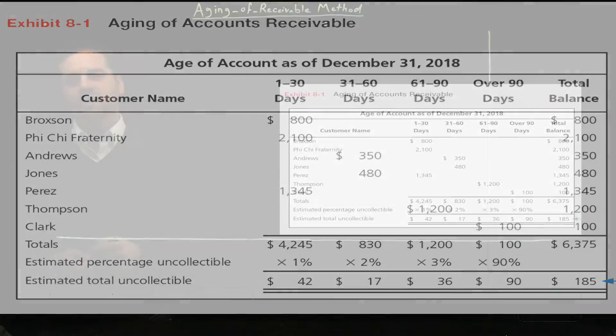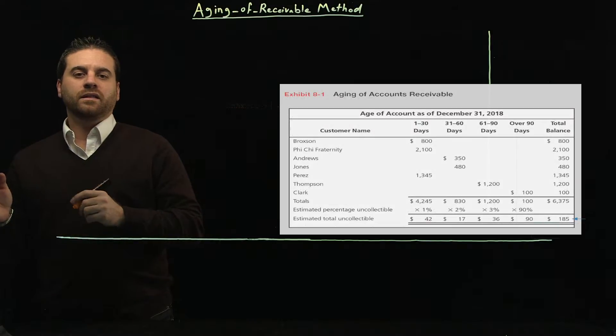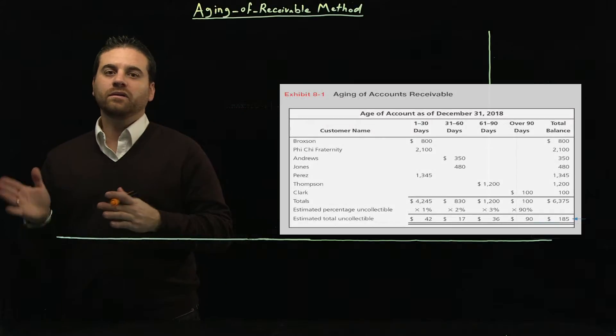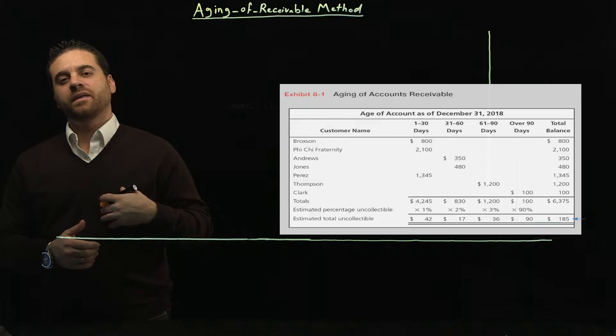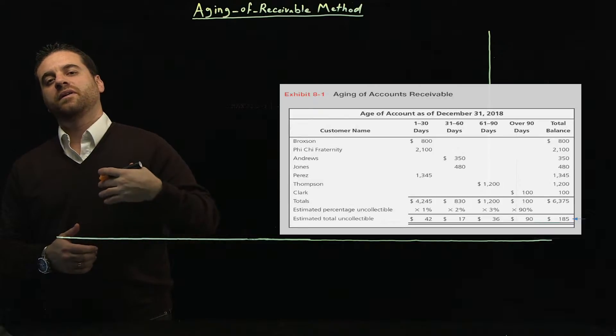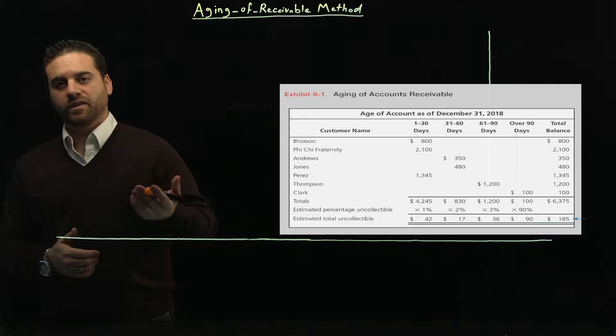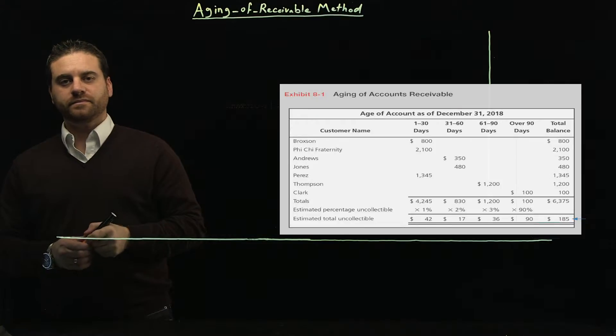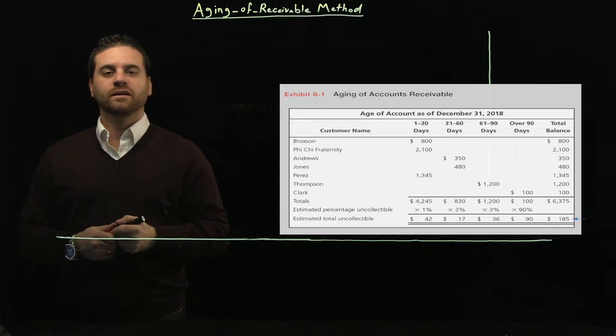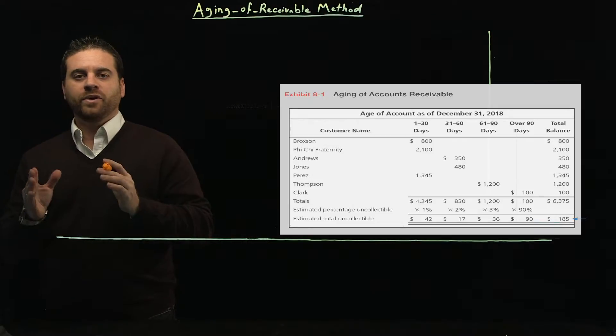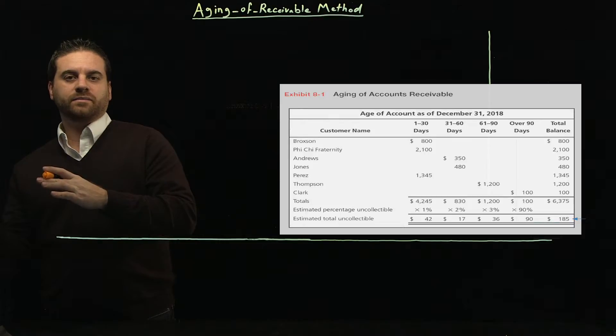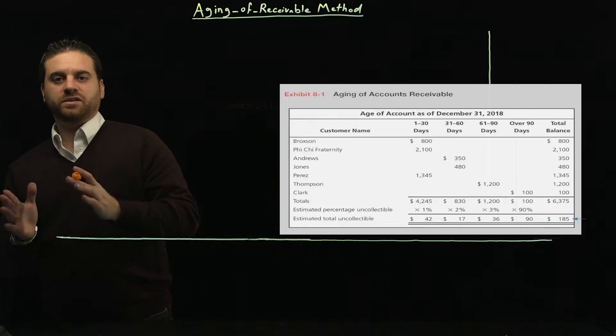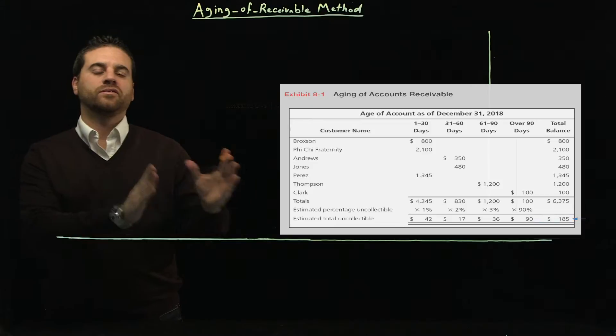Now, the idea here is the longer, or the older that amount owed by the customers, the higher percentage of expected uncollectible amount will be given to that amount because it's been there for a while. So that's the difference between this and the previous method. It's not just one percentage.